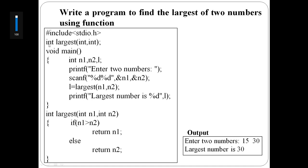In the function declaration: return type, function name, argument type. Argument type is int, int — two integers. In the main function, enter two numbers. Read n1 and n2, say 15 and 30.